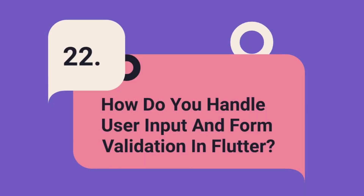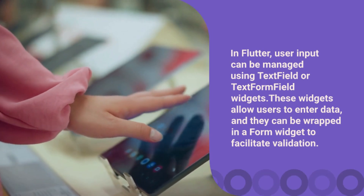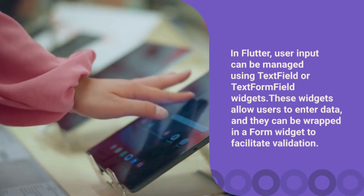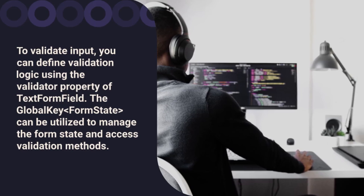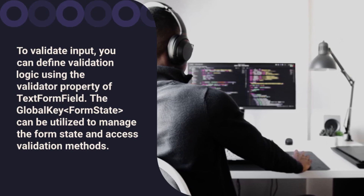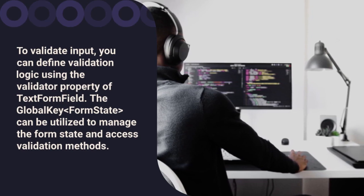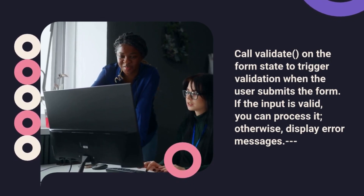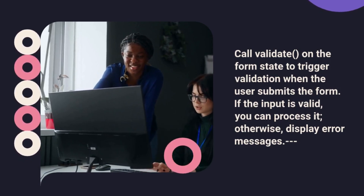Question 22: How do you handle user input and form validation in Flutter? In Flutter, user input can be managed using TextField or TextFormField widgets, which allow users to enter data and can be wrapped in a Form widget to facilitate validation. To validate input, you can define validation logic using the validator property of TextFormField. A GlobalKey<FormState> can be utilized to manage the form state and access validation methods. Call validate on the form state to trigger validation when the user submits the form — if the input is valid, you can process it; otherwise, display error messages.